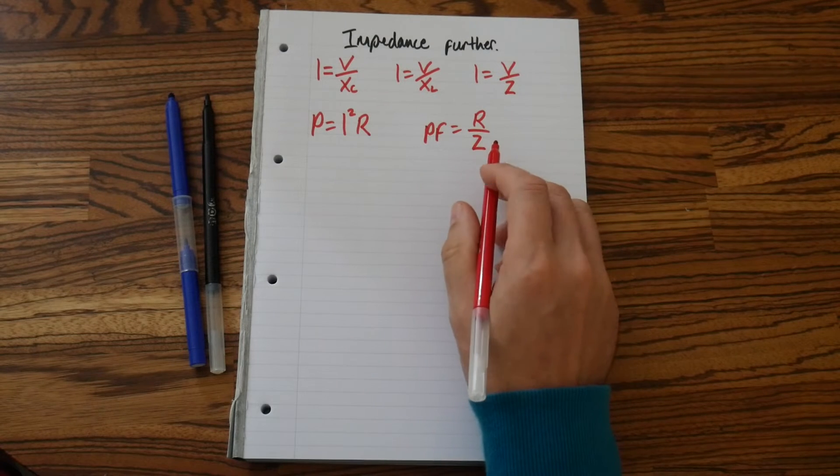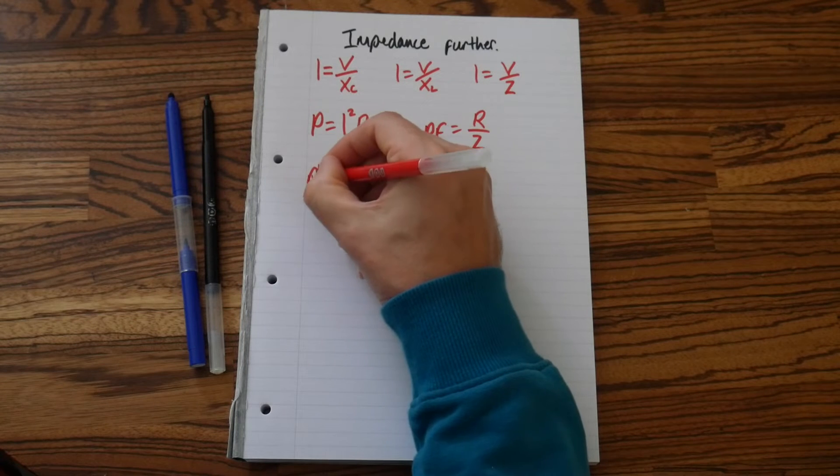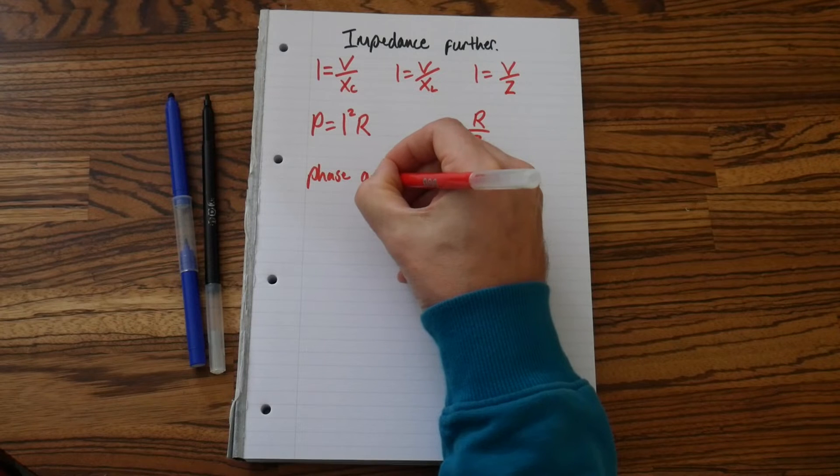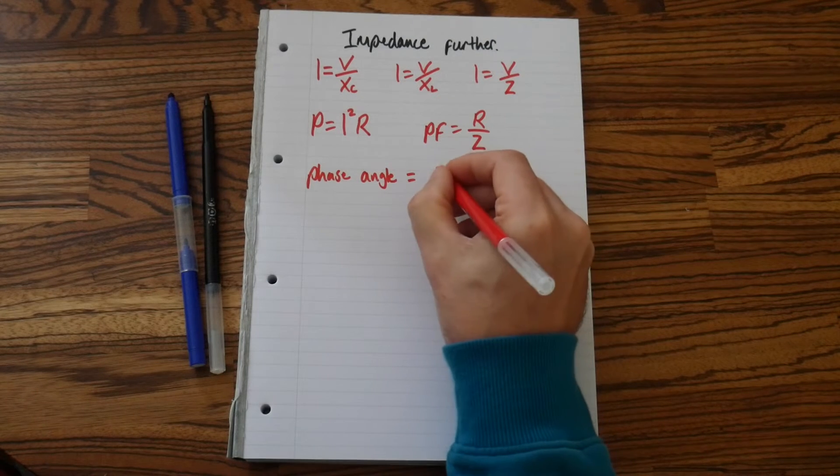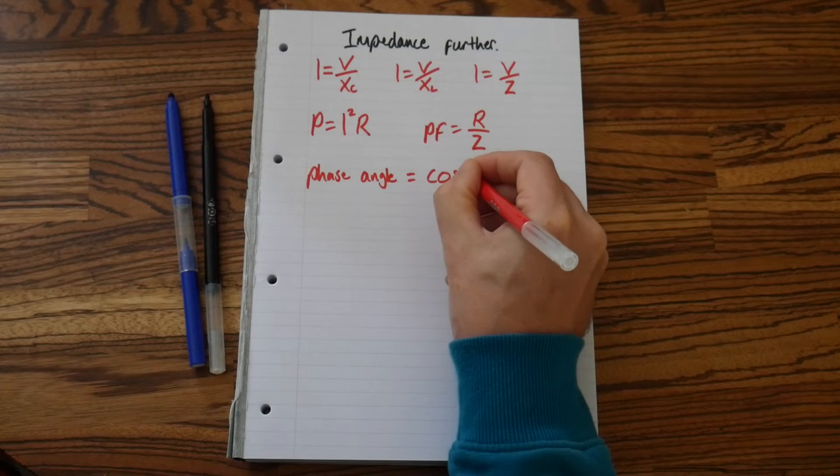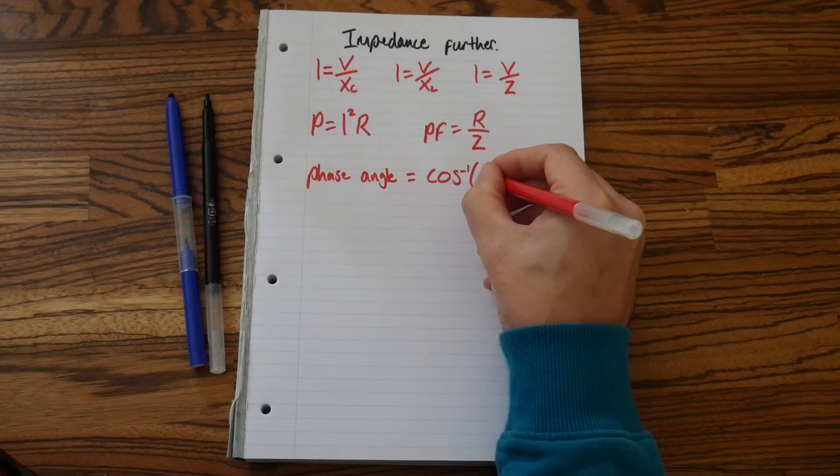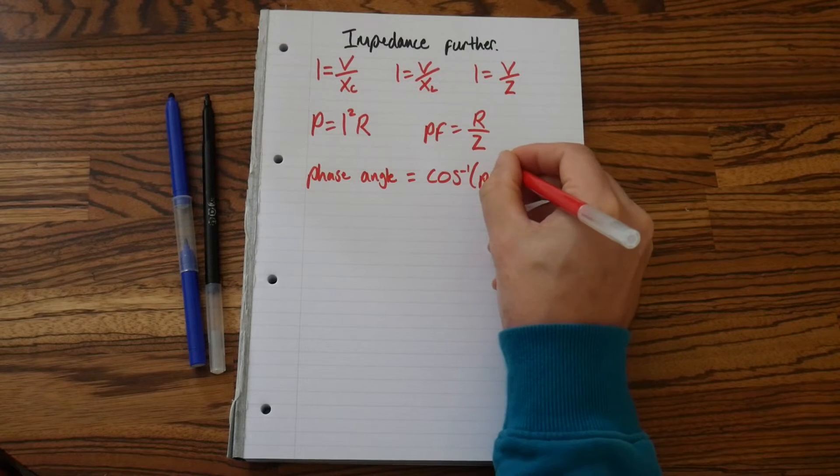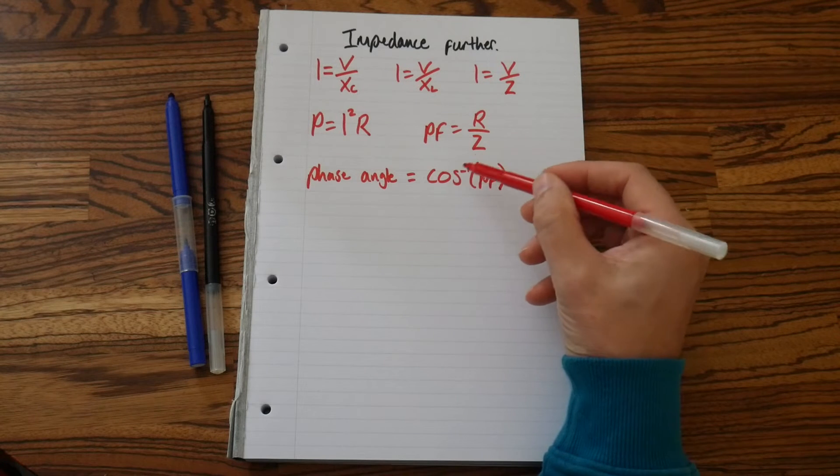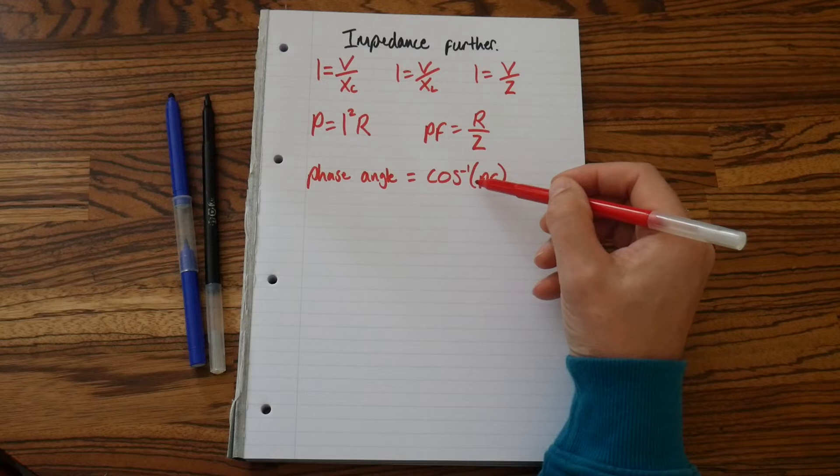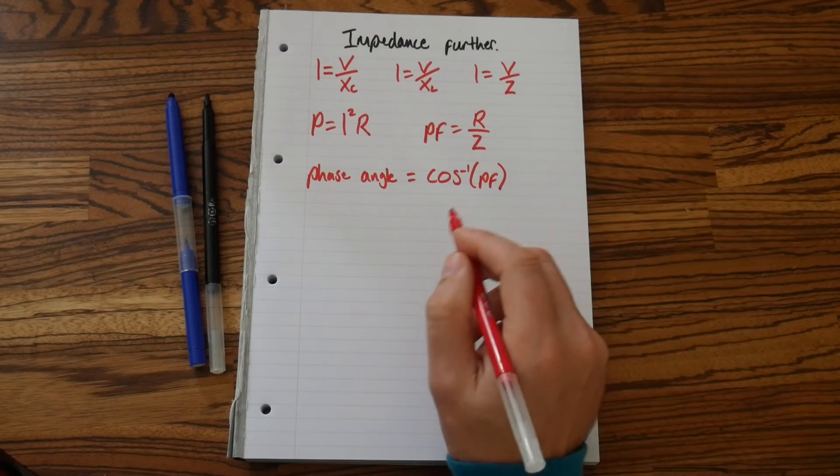We then need to work out our phase angle from our power factor. So phase angle equals, now this is the inverse of cosine. Cosine minus one is the inverse of cosine times the power factor. So in your calculator, if you push shift cosine, then it will display this. Cos minus one, open brackets. You then put the power factor answer for this one into the bracket, close bracket, and push equals.